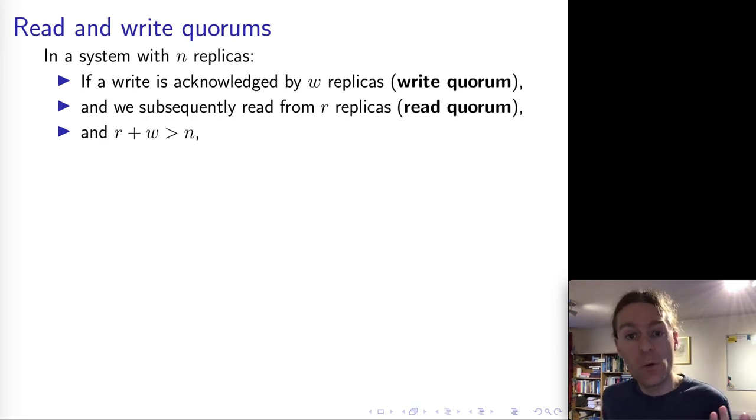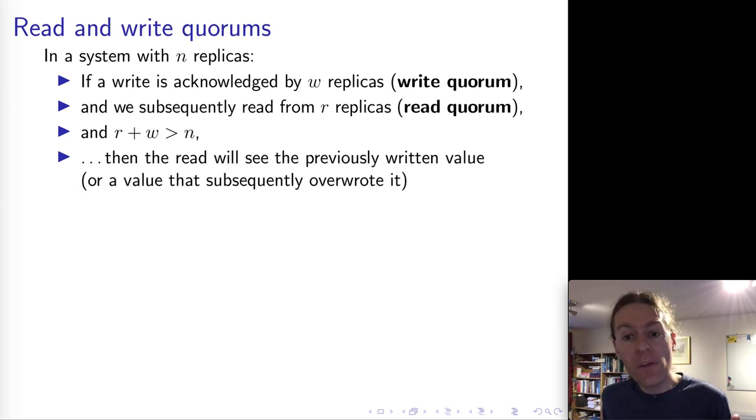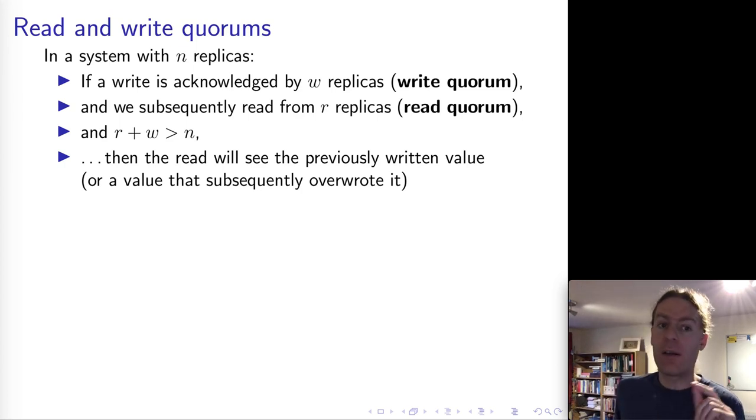So in our example here, W was 2, R was 2, and N was 3. So 2 plus 2 is greater than 3. And so in this case, we can guarantee that the read will see the previously written value.